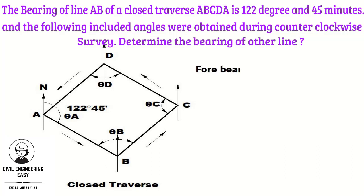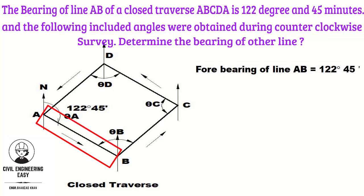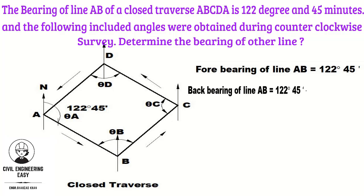It is given that the forebearing of line AB is equal to 122.45 min. The backbearing of line AB will be equal to 122.45 min plus 180 degrees, which gives an answer of 302.45 min as the backbearing of line AB.